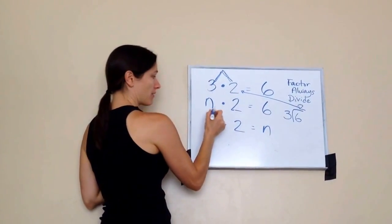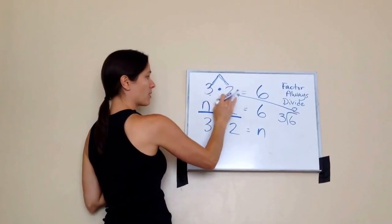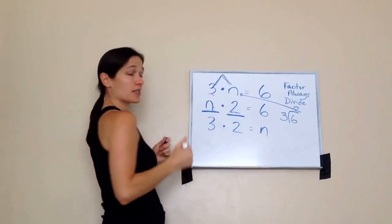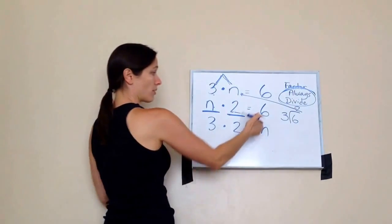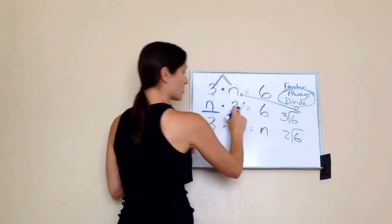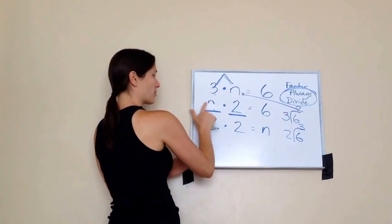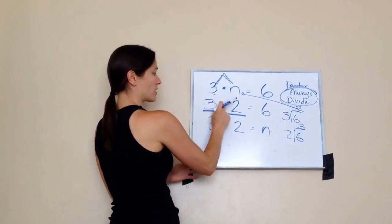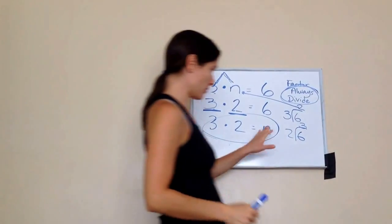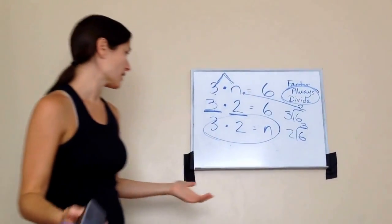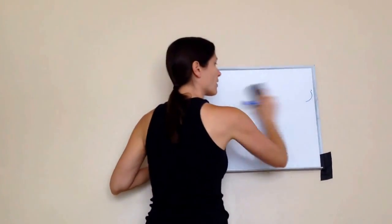Here's another missing factor. If you have missing factors, you always divide. Take the biggest number, 6, divided by the smallest, 2, and 2 goes into 6 three times. Put it back: 3 times 2 equals 6. These are the normal problems you're used to — you just have a letter in for the missing number.